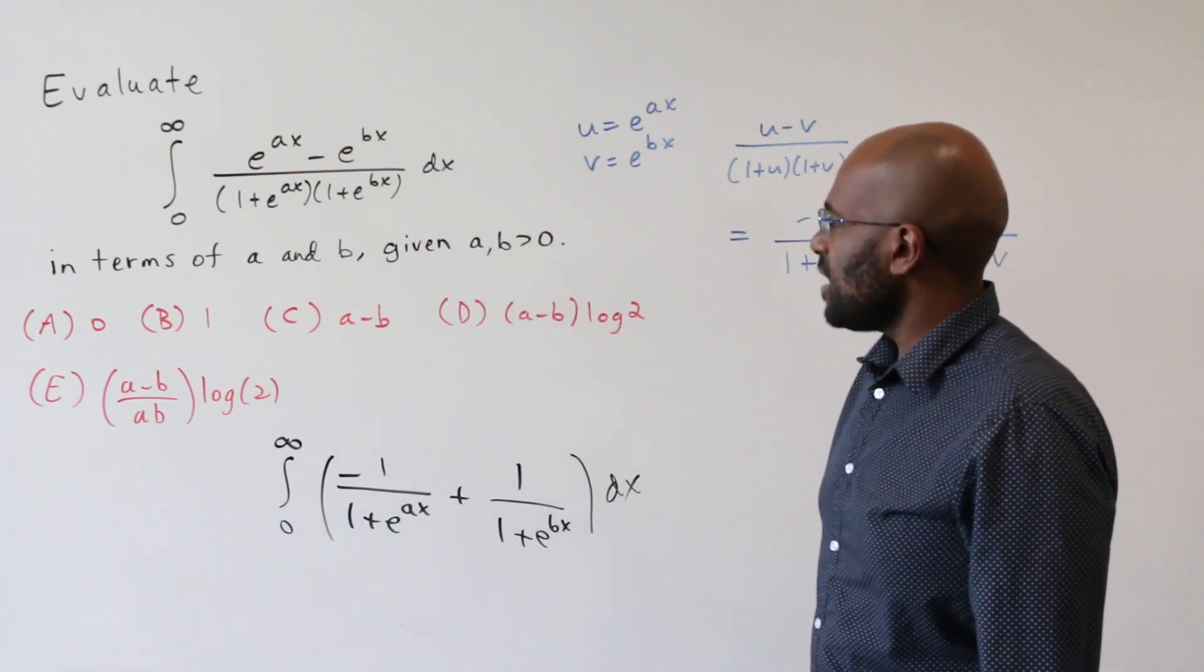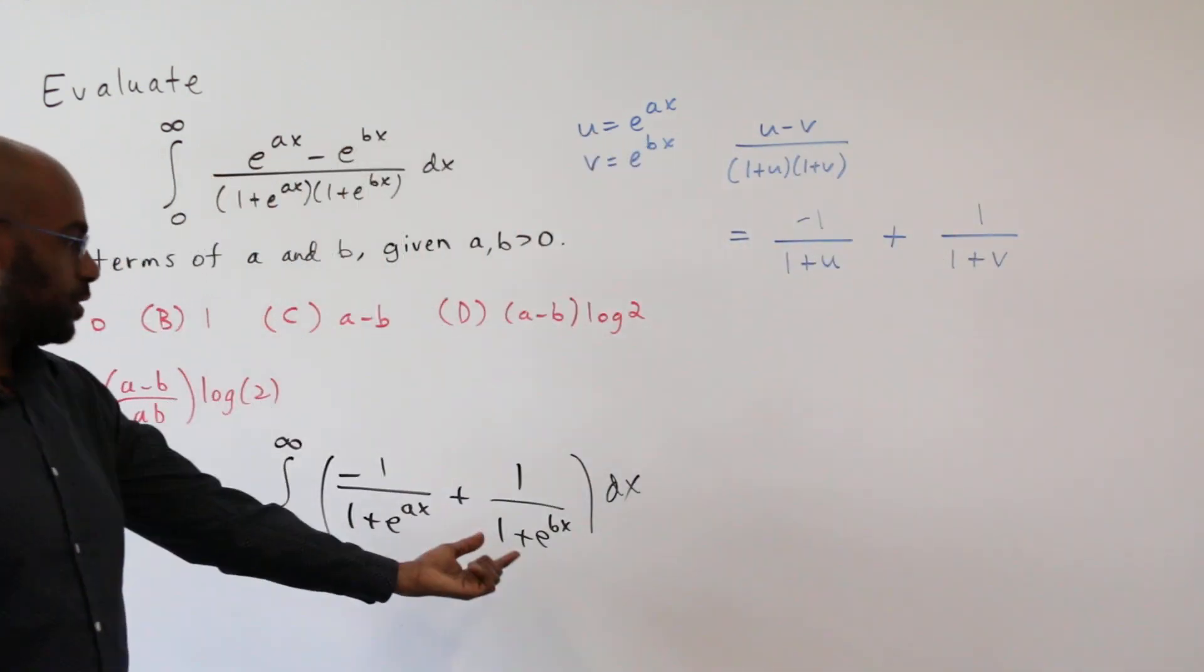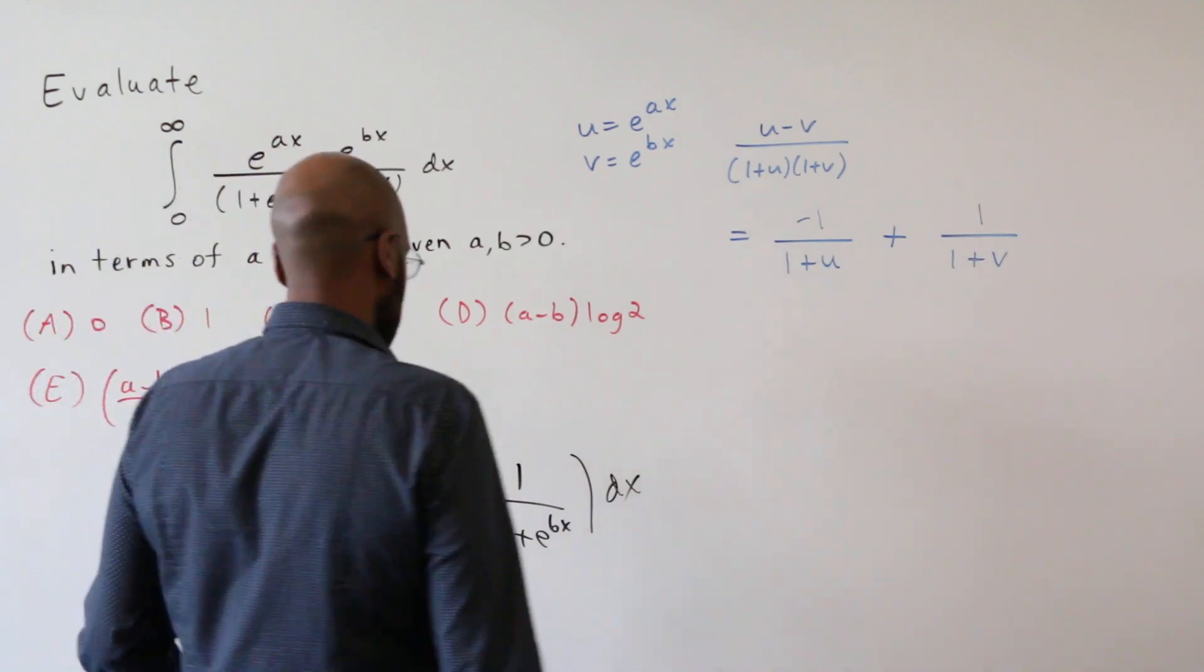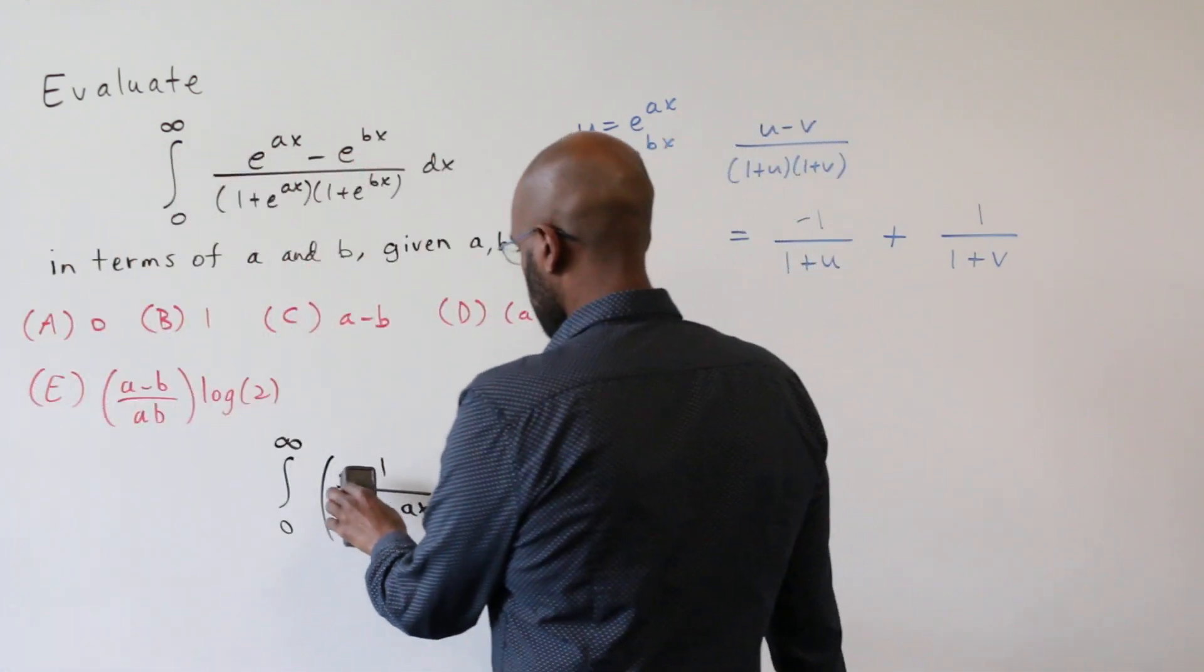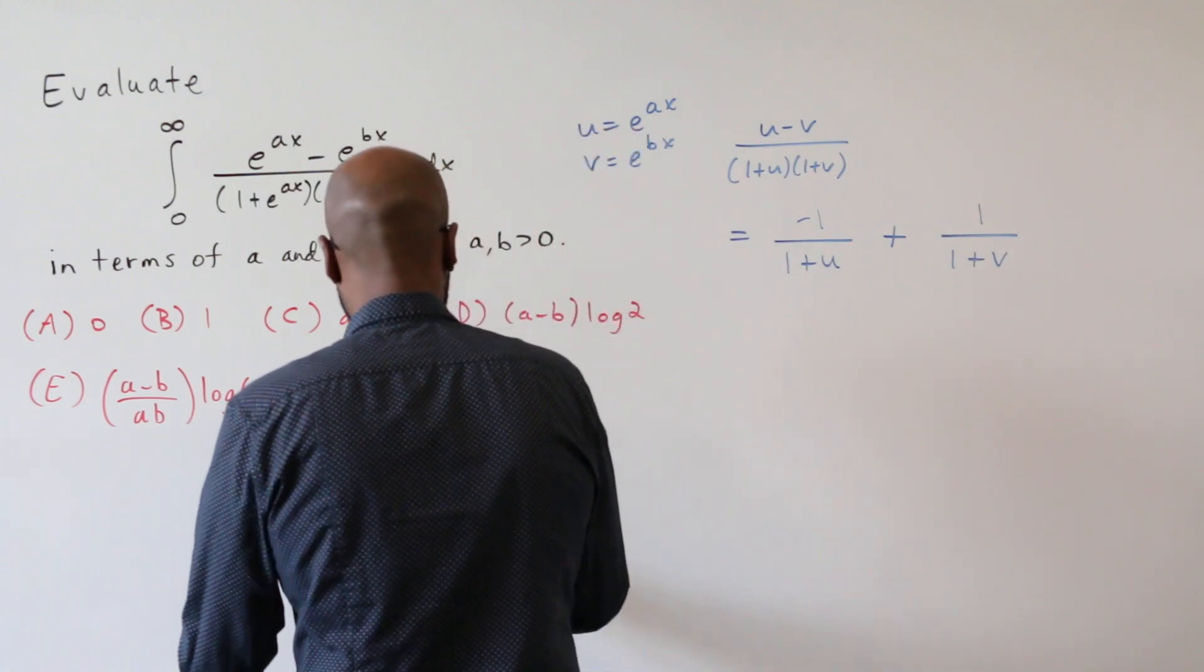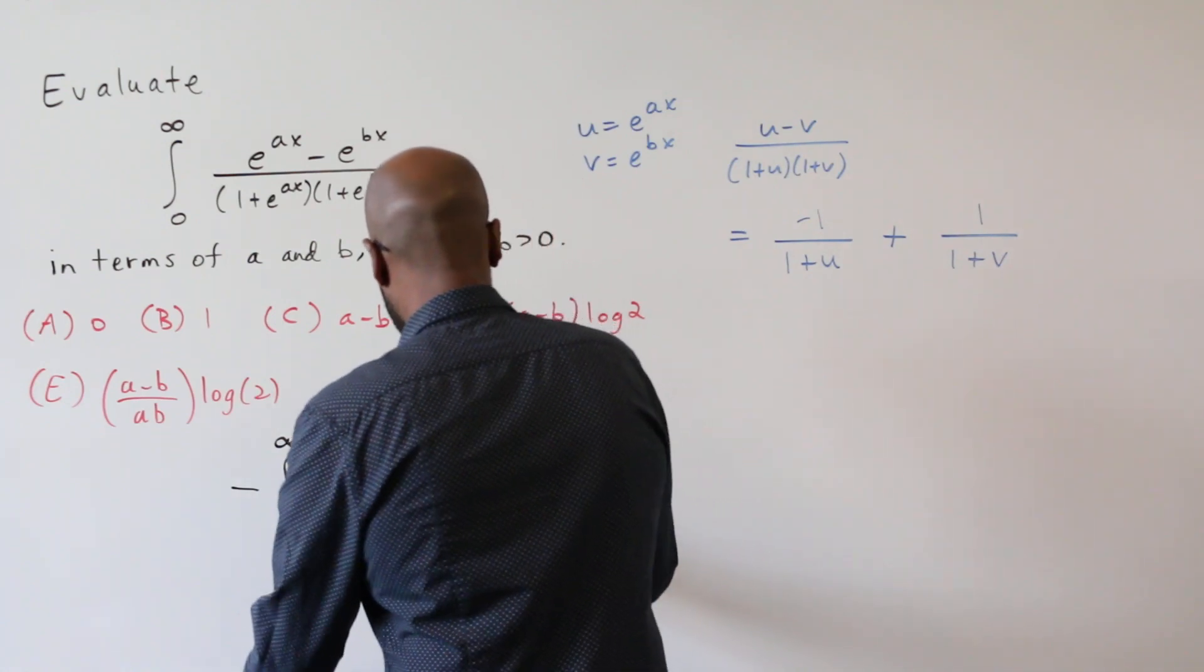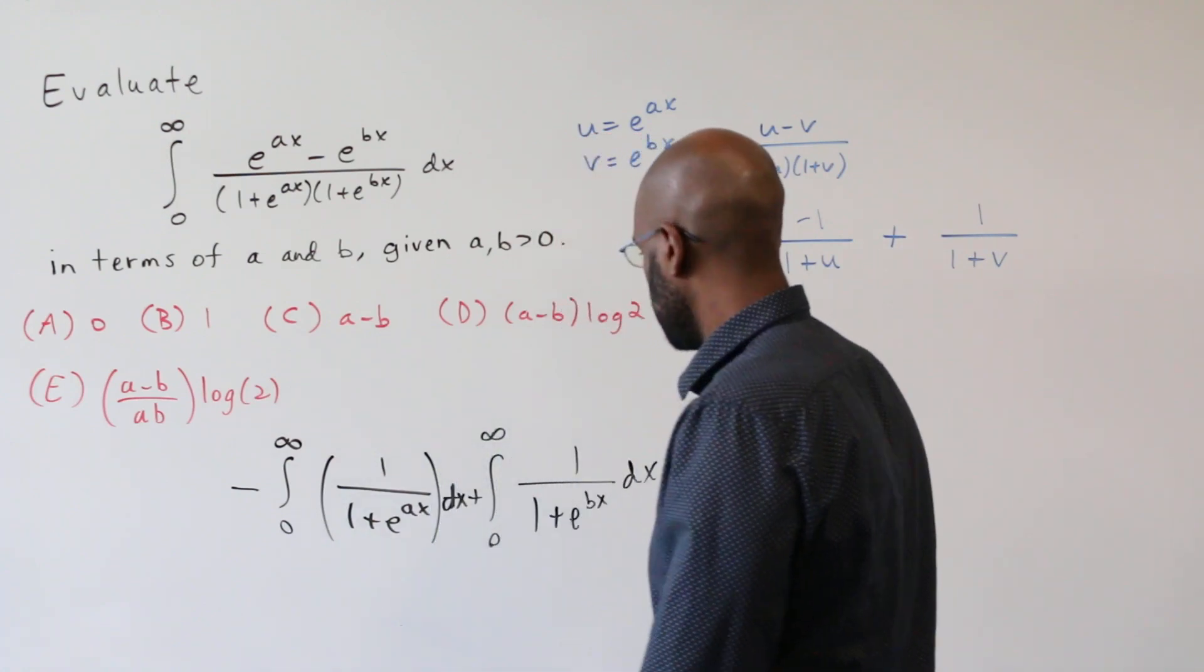Now luckily the answers in this problem suggest that each of these individual integrals actually converges even though we have infinity here. We don't have an answer choice like the integral doesn't exist. So I'm going to actually split these two integrals into two pieces. We'll take the negative out of this one and then add the other integral. So this is dx plus this.